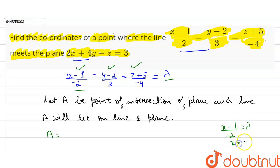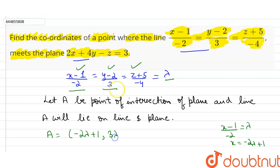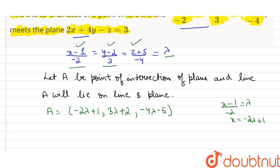we get x = -2λ + 1. Similarly, (y-2)/3 = λ, so y = 3λ + 2 (3 goes to the RHS and multiplies with lambda, and -2 goes to RHS to become +2). Similarly, z = -4λ - 5. So these are the coordinates of point A.